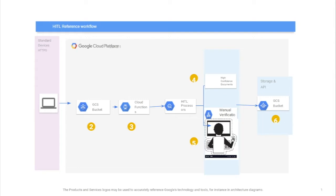A lot of times, many companies have complex and sensitive data that needs human interaction to make sure accuracy, consistency, and compliance are met. This feature enables a human intervention in order to correct and update the data, and then save it to a Google Cloud bucket for further processing.